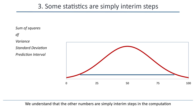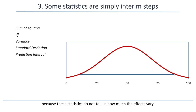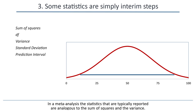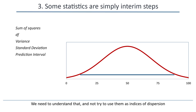If we reported only the sum of squares and the variance, the reader would be lost because these statistics don't tell us how much the effects vary. In a meta-analysis, the statistics that are typically reported are analogous to the sum of squares and the variance — they don't tell us how much the effect size varies. We need to understand that and not try to use them as indices of dispersion.